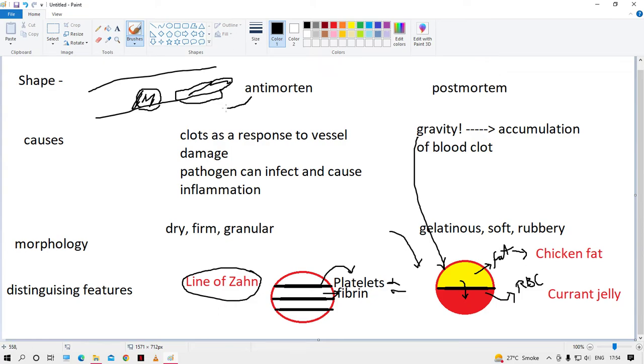Whereas in postmortem clot, there's no injury—it's just the settling of the blood. Normal vessel and blood is not flowing, so the blood just accumulated here. The shape can be any shape in antemortem clot, whereas in postmortem clot, the clot takes up the shape of the vessel in which it is formed.